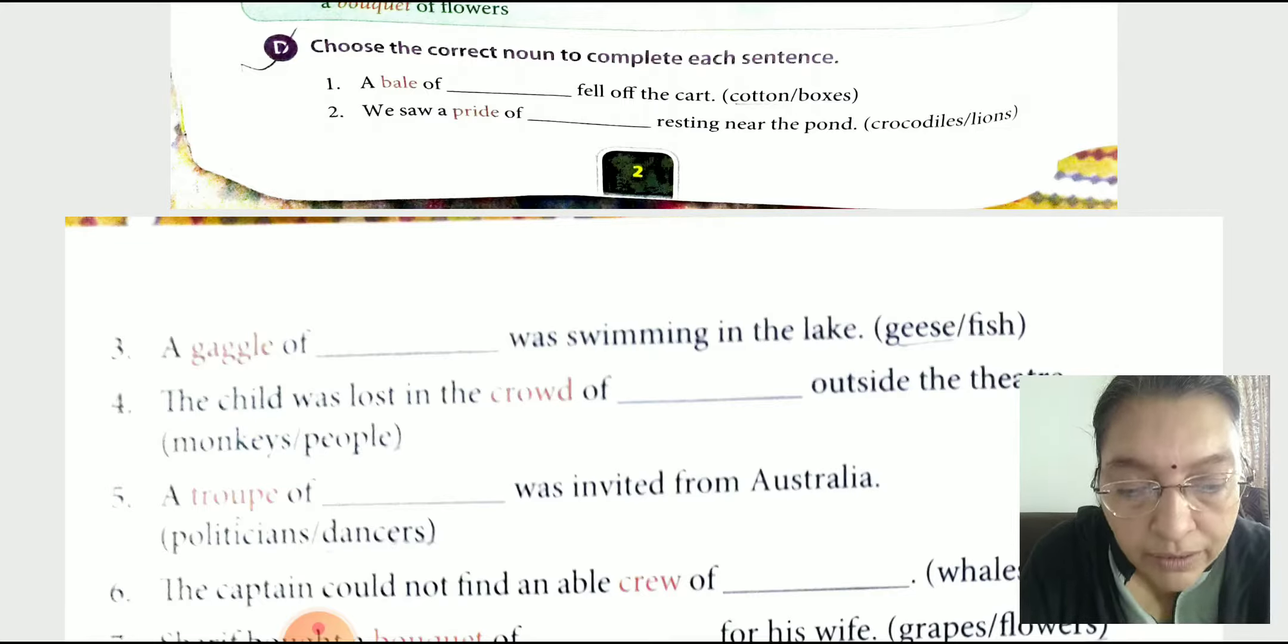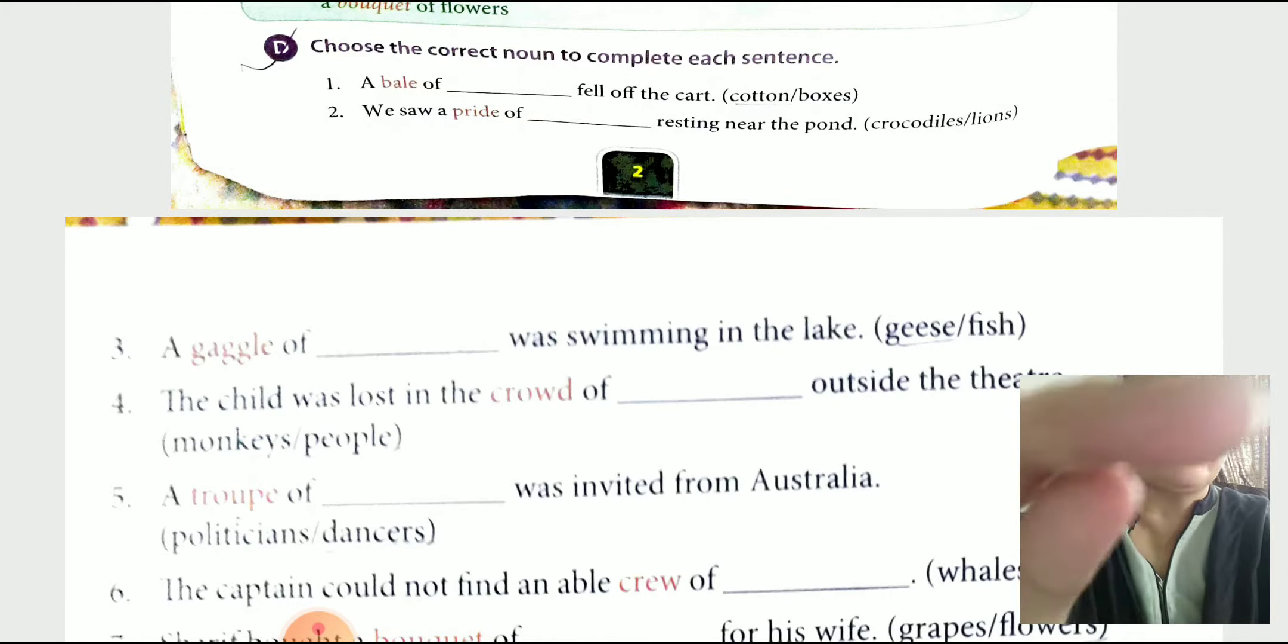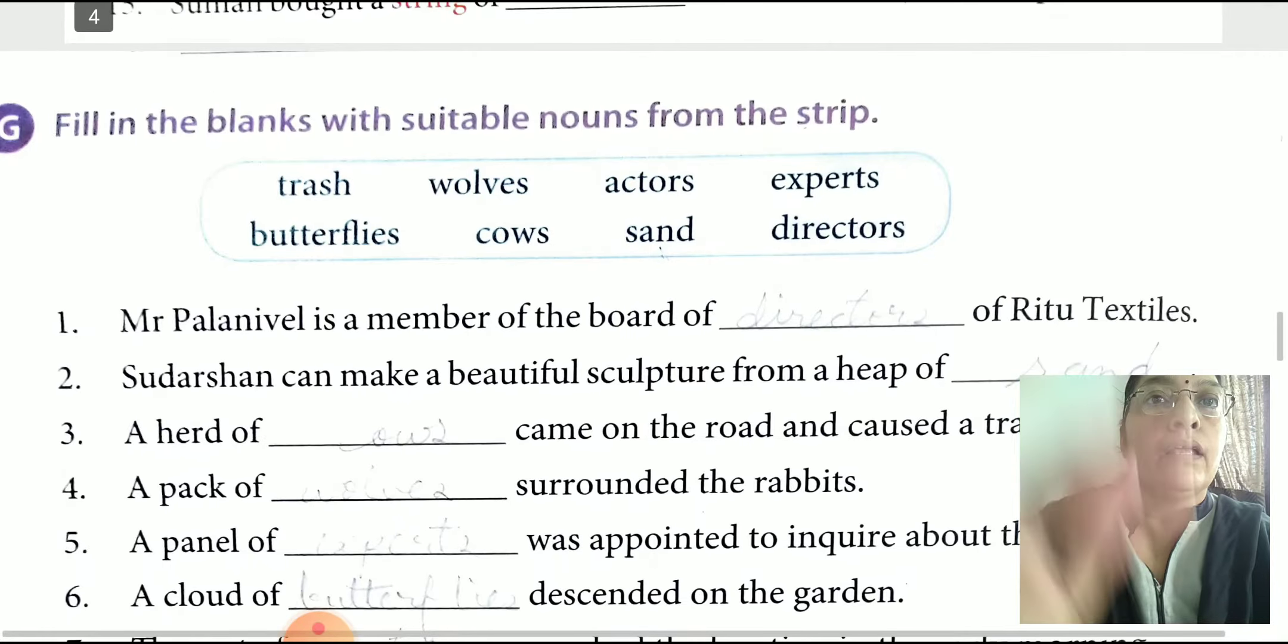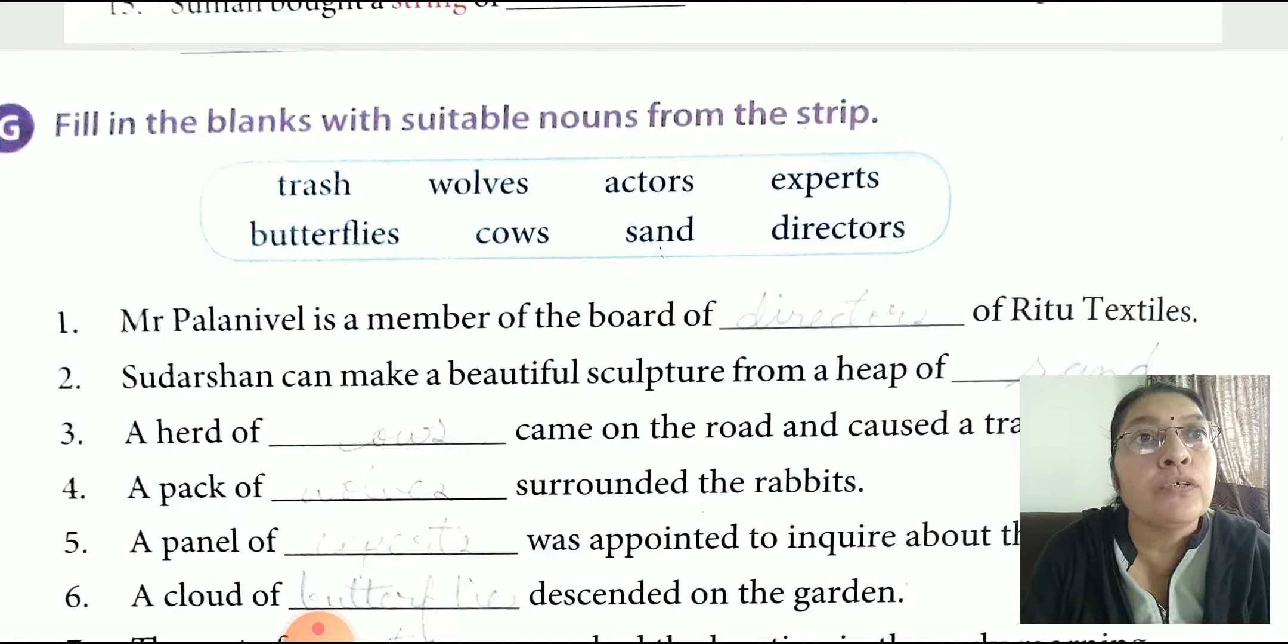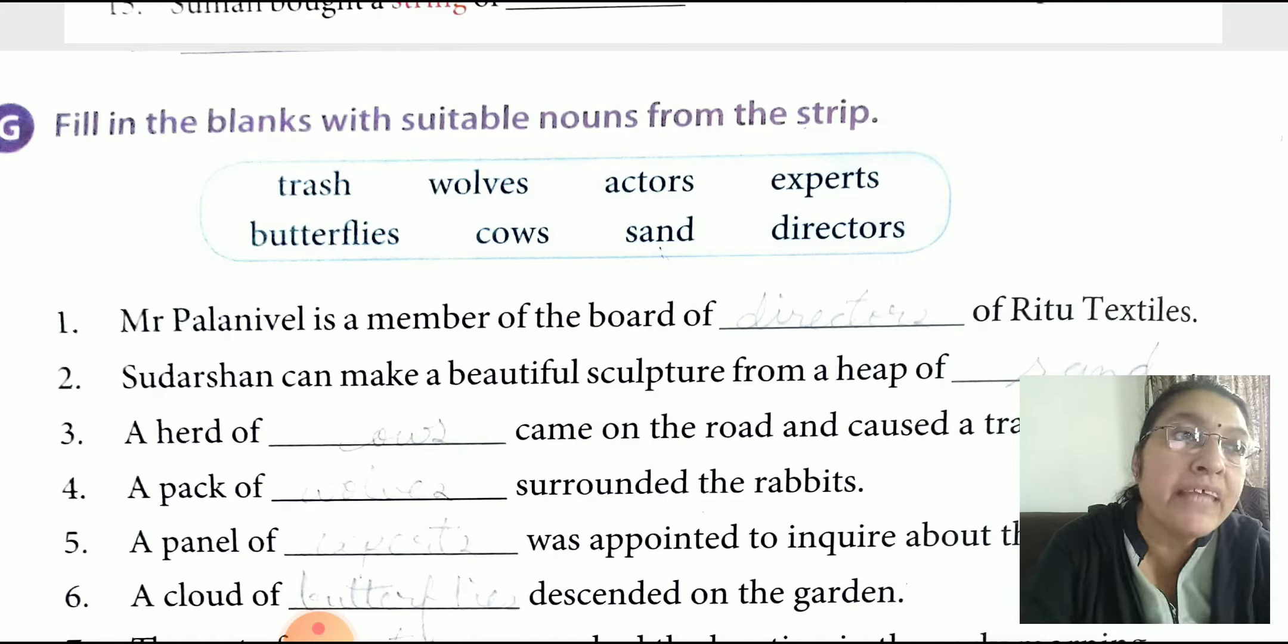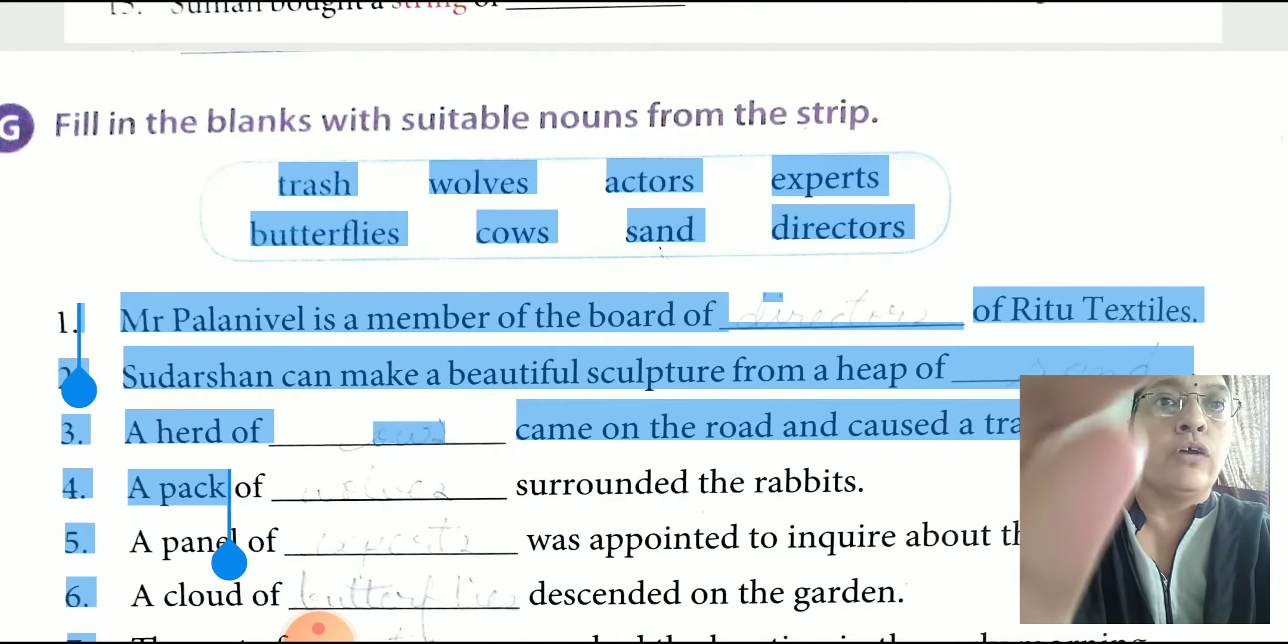Now we go as per roman 3. Fill in the blanks with suitable nouns from the strip. In that question also we give options. Mr. Palaniwell is a member of the board of dash of Ritu textiles. Correct answer from option you have to choose: directors. Understand: a herd of cows, wolves, a panel of experts. As per that collective noun you have to tick mark correct option.